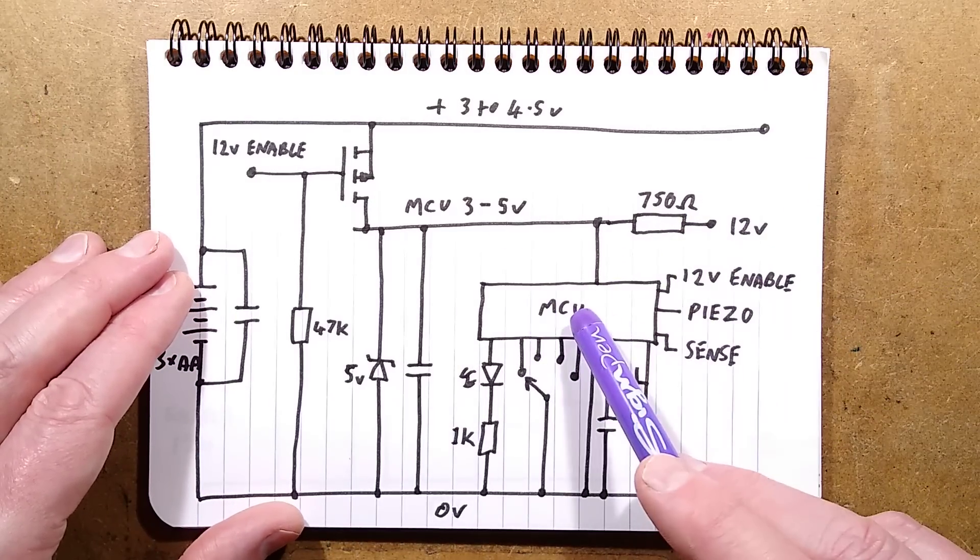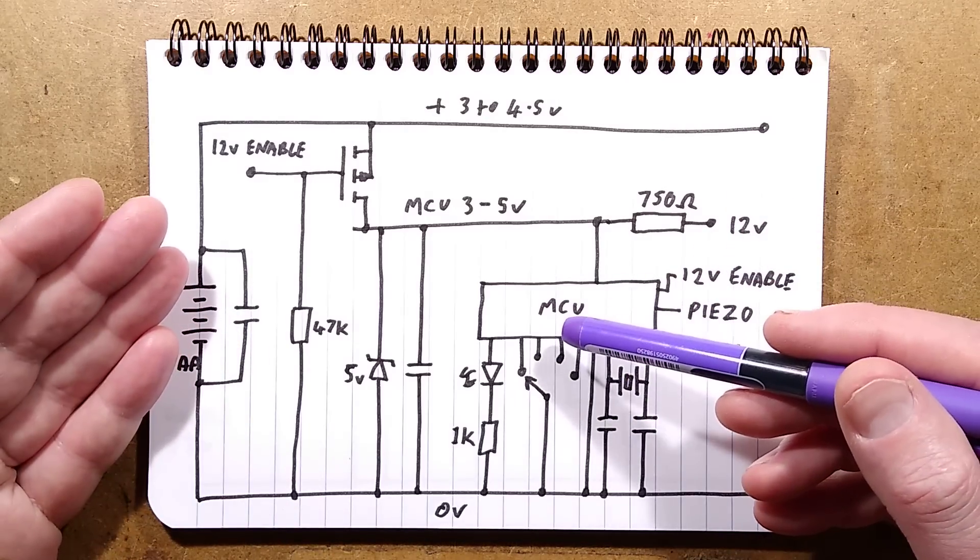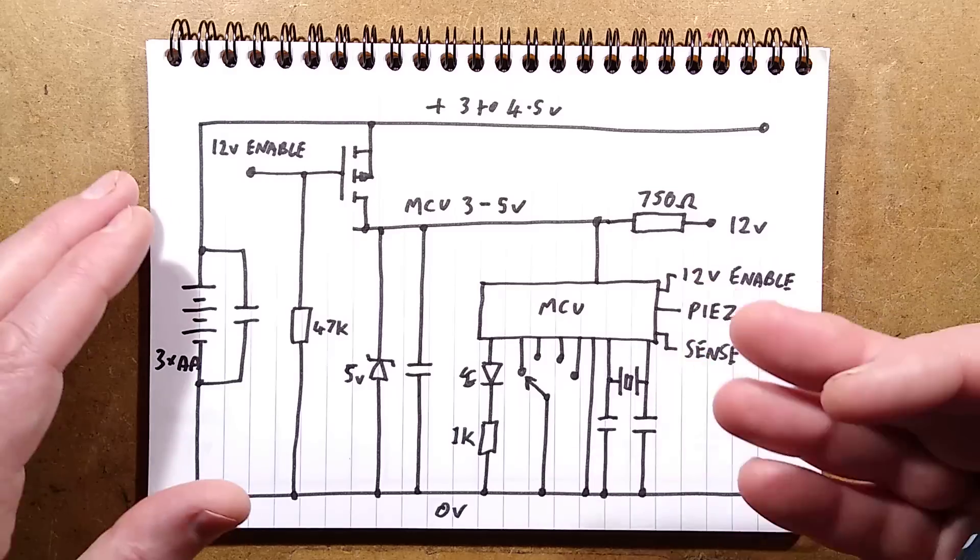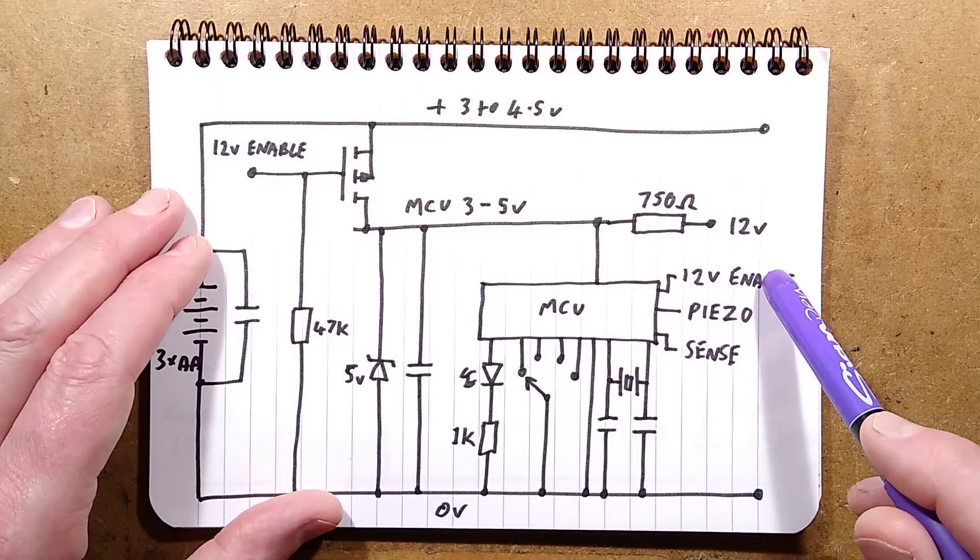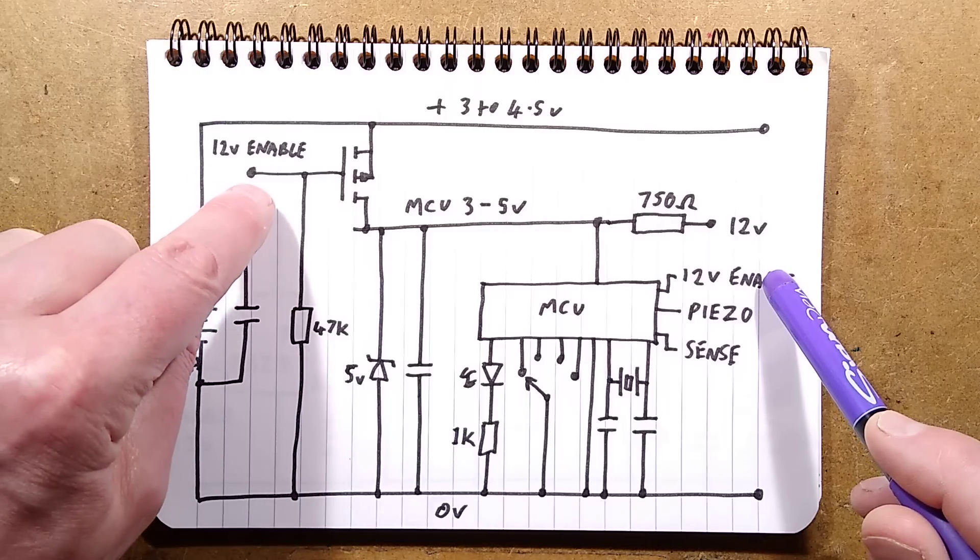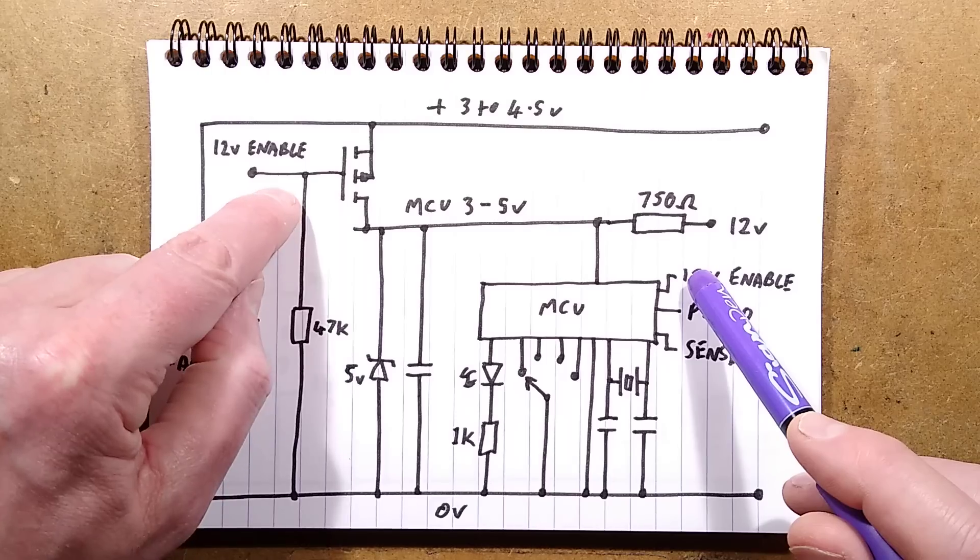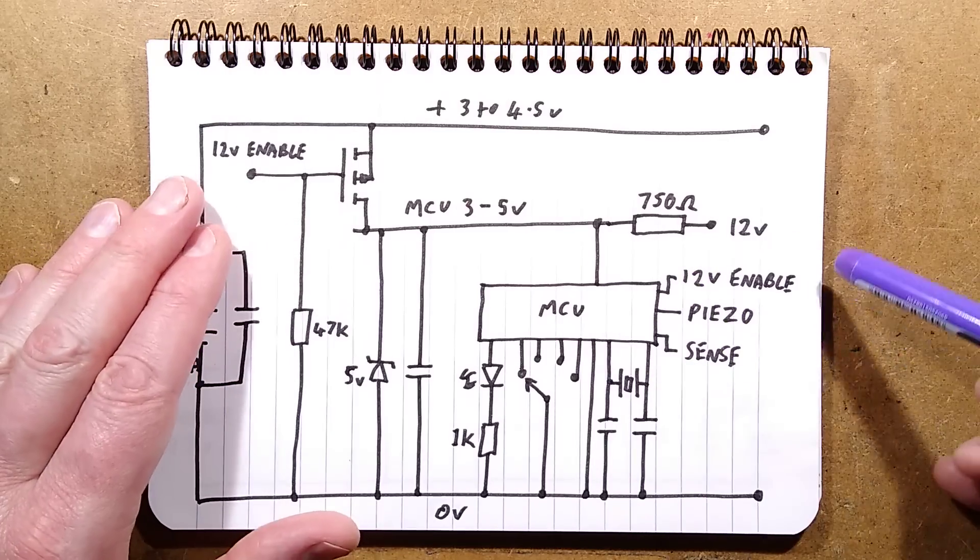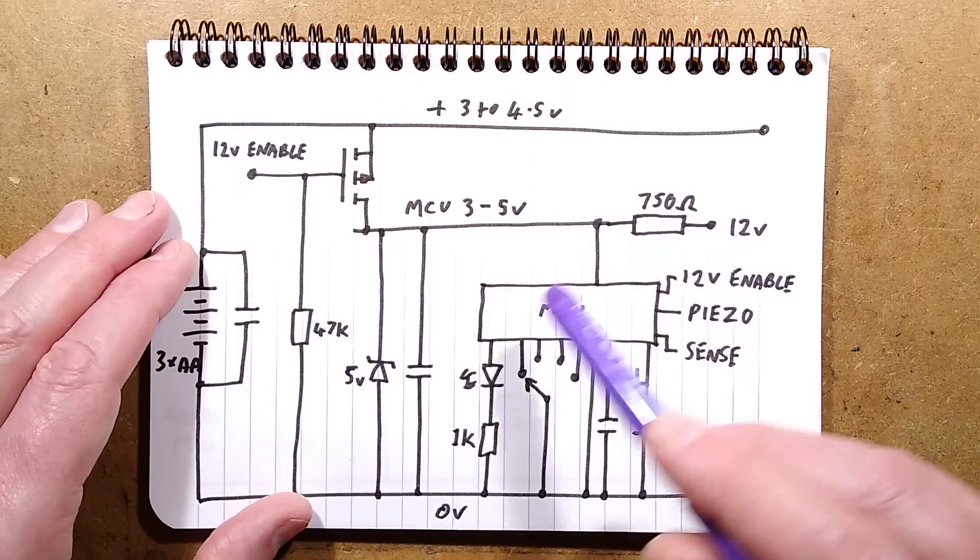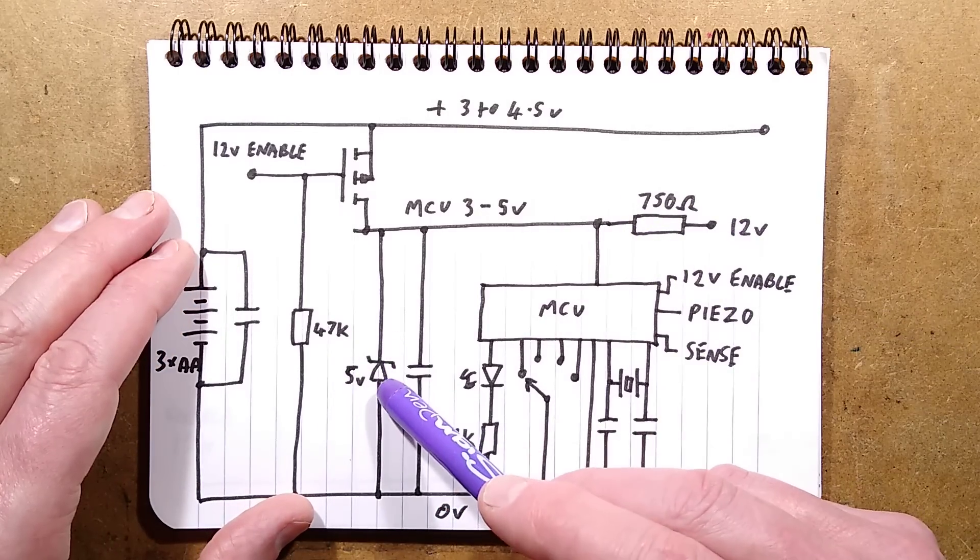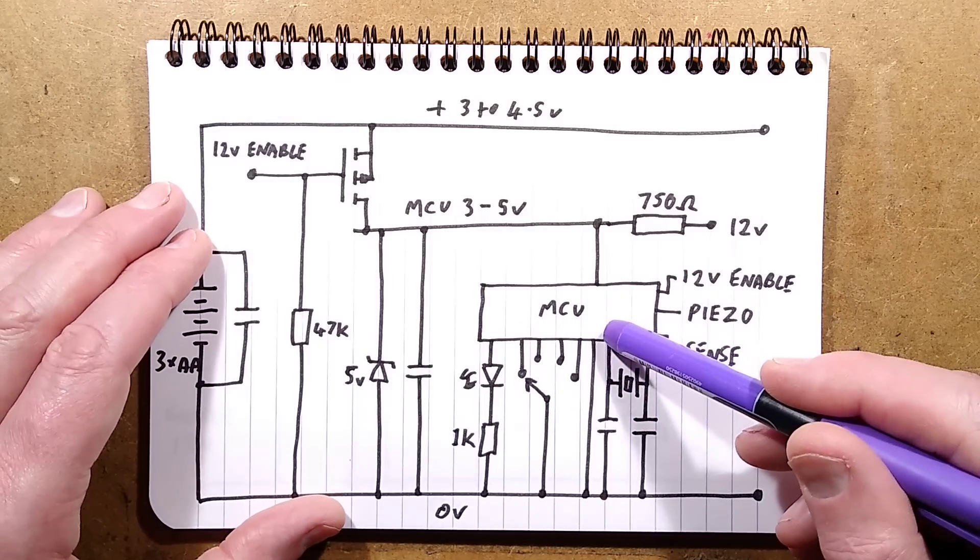However, when the microcontroller decides to actually get active and turn the piezoelectric disc on to atomize the aroma, it puts a 12 volt enable out. But that 12 volt enable also goes to this MOSFET, which actually, because this is going positive, it effectively turns the MOSFET off. But it turns a 12 volt supply on that then powers this via a current limiting resistor and there is a zener diode to cap that at 5 volts. So it effectively powers the microcontroller at the full 5 volts.